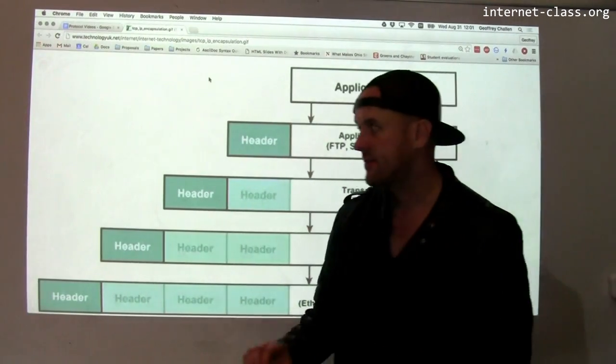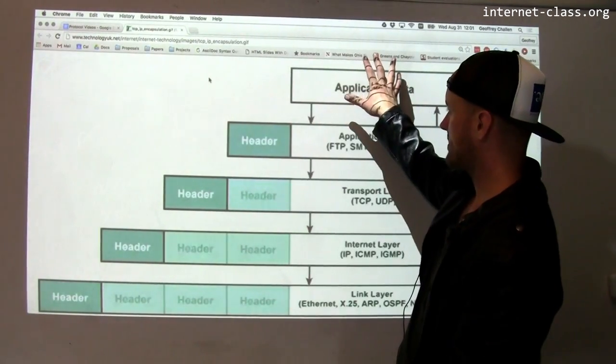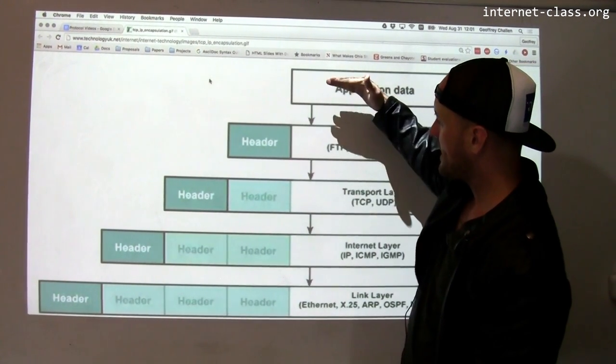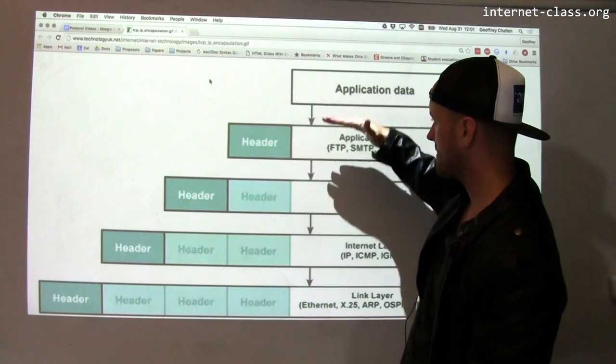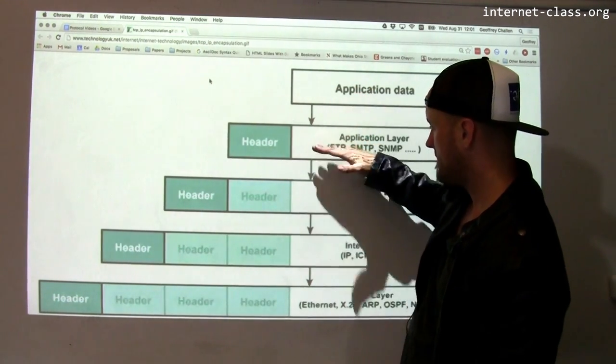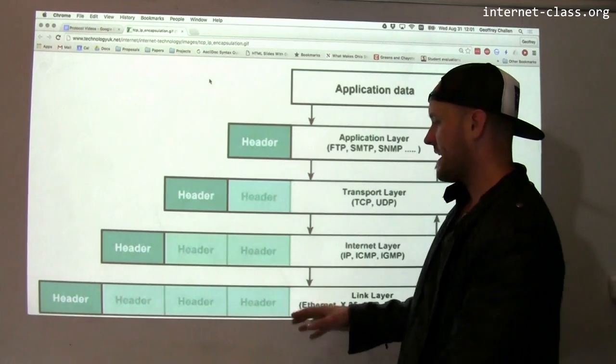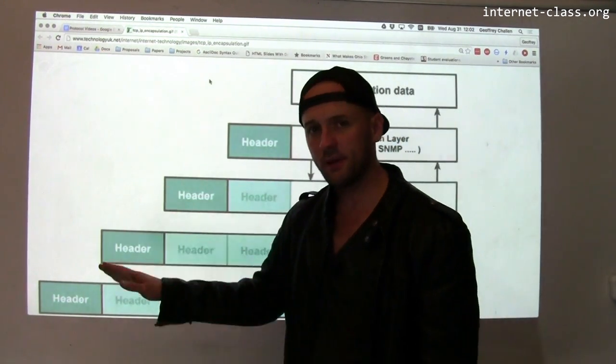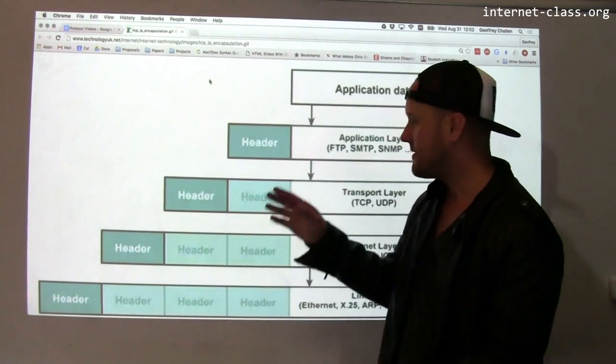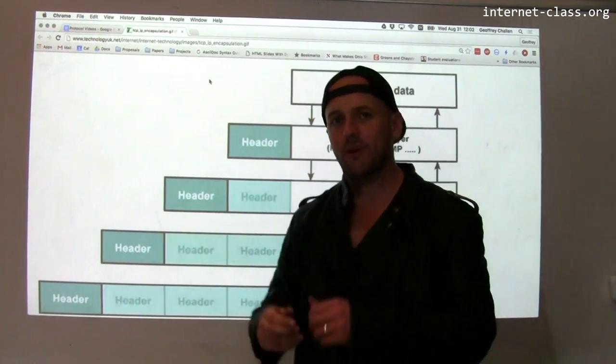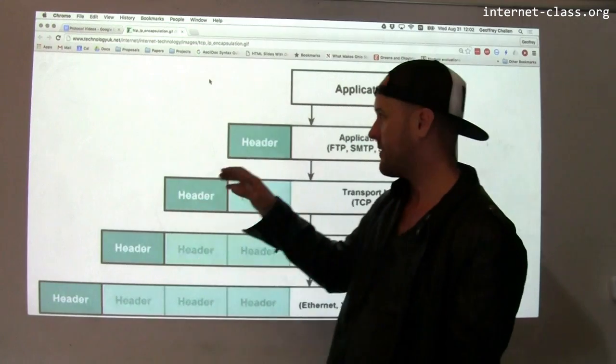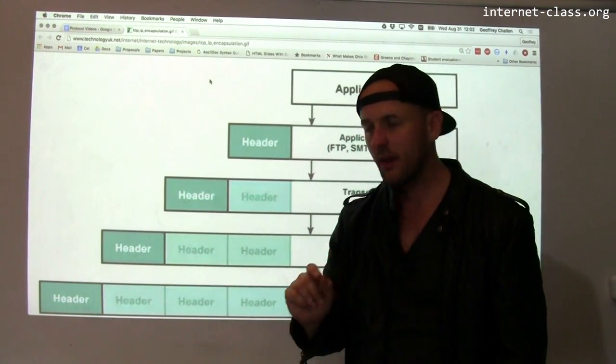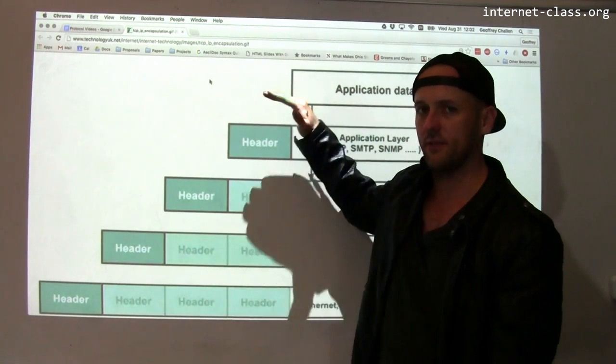So let's go back and review the protocol stack. We have application data that might be transmitted from one computer to another, and you can see that as the data is passed from the application level down to TCP, to IP, and finally down to the physical link layer where it's transmitted between computers, the packet keeps getting a little bit bigger. What's happening is that each level of the protocol stack is wrapping the data that it gets from the higher level with a little bit of extra information that it needs to operate. When the packet arrives on the other end, this process is reversed.